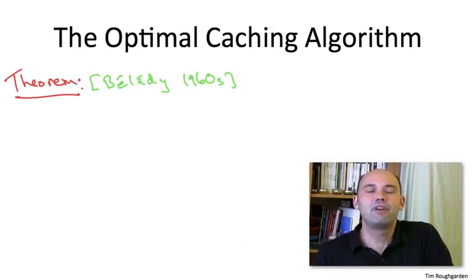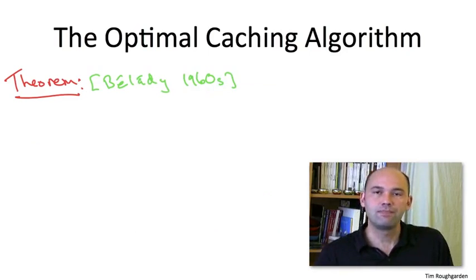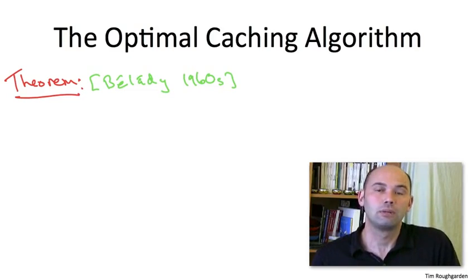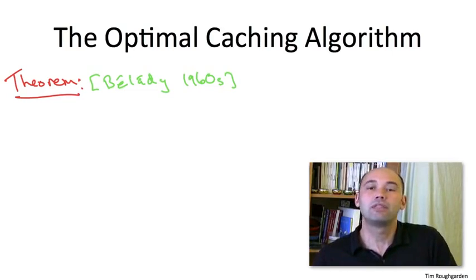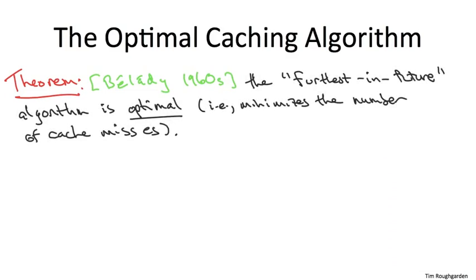So this question was given a very elegant answer by Belotti back in the 1960s. And I'm going to state the answer as a theorem. It's a theorem we're not going to prove for reasons I'll discuss in a second. But what the theorem says is that a natural greedy algorithm is an optimal algorithm for the caching problem. That is, it minimizes the number of cache misses over any way you might think about managing the cache.